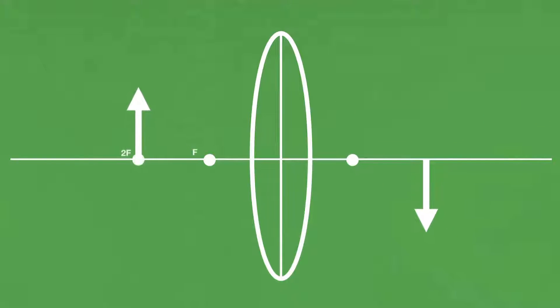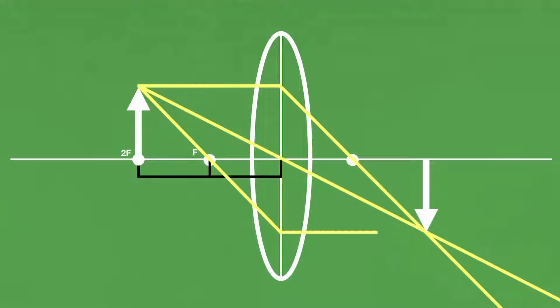Next, let's try with an arrow at twice the distance of the focal point. This time we get an interesting result. The size of the image is actually the same as the object. Nevertheless, it is still inverted and real. This is just a consequence of following the rays.